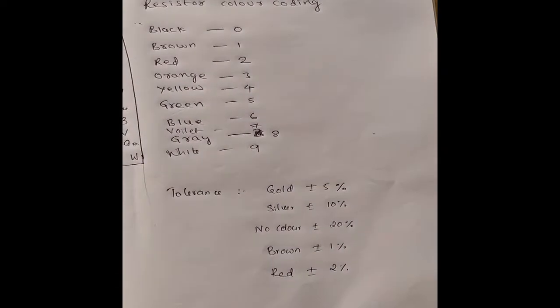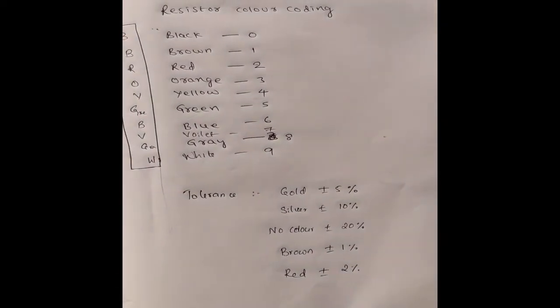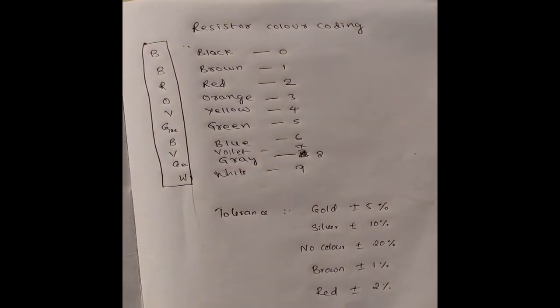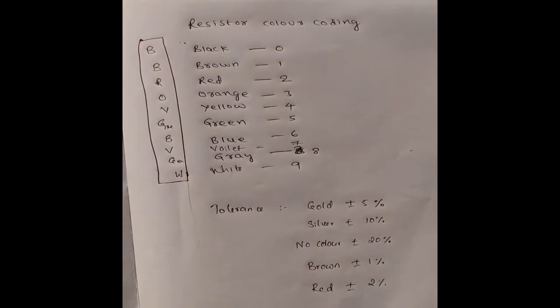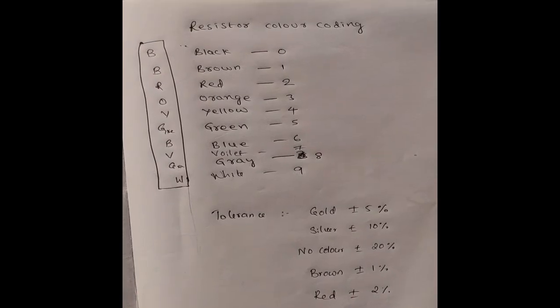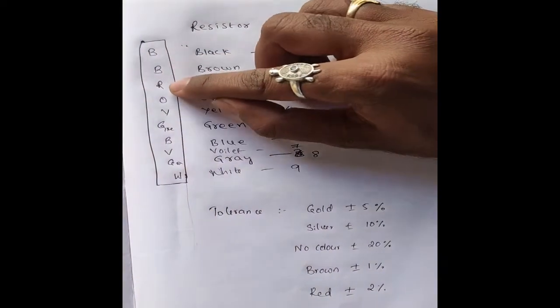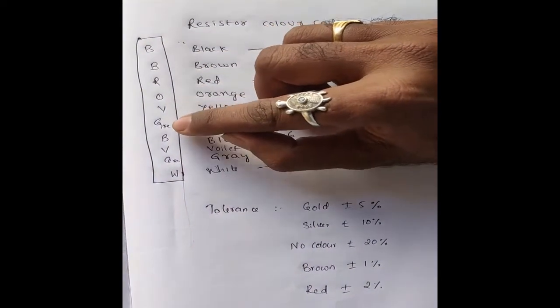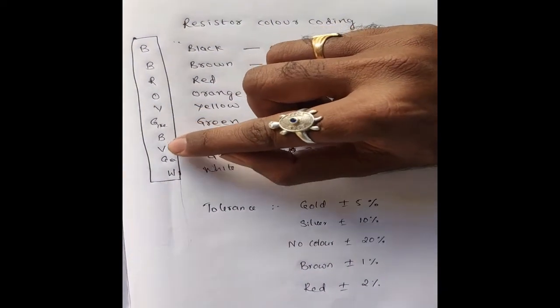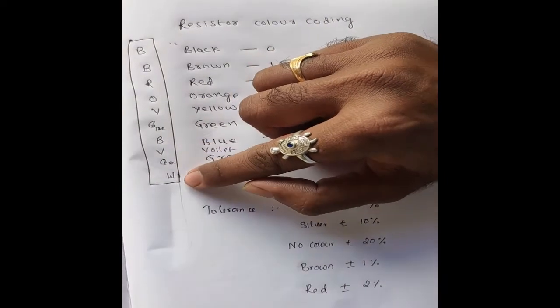This notation can be easily remembered by following the mnemonic: BB ROY Great Britain Very Good Wife.